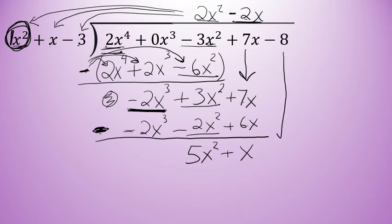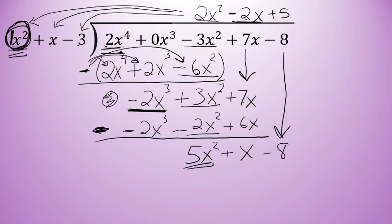Bring down the next term, which is negative 8. For the final time, ask: X squared times what is 5X squared? The variables already match up, so all I need to multiply 1X squared by is a positive 5. I'll take that 5 and multiply it times X squared, X, and negative 3. 5 times X squared is 5X squared. 5 times X is 5X. And 5 times negative 3 is negative 15.